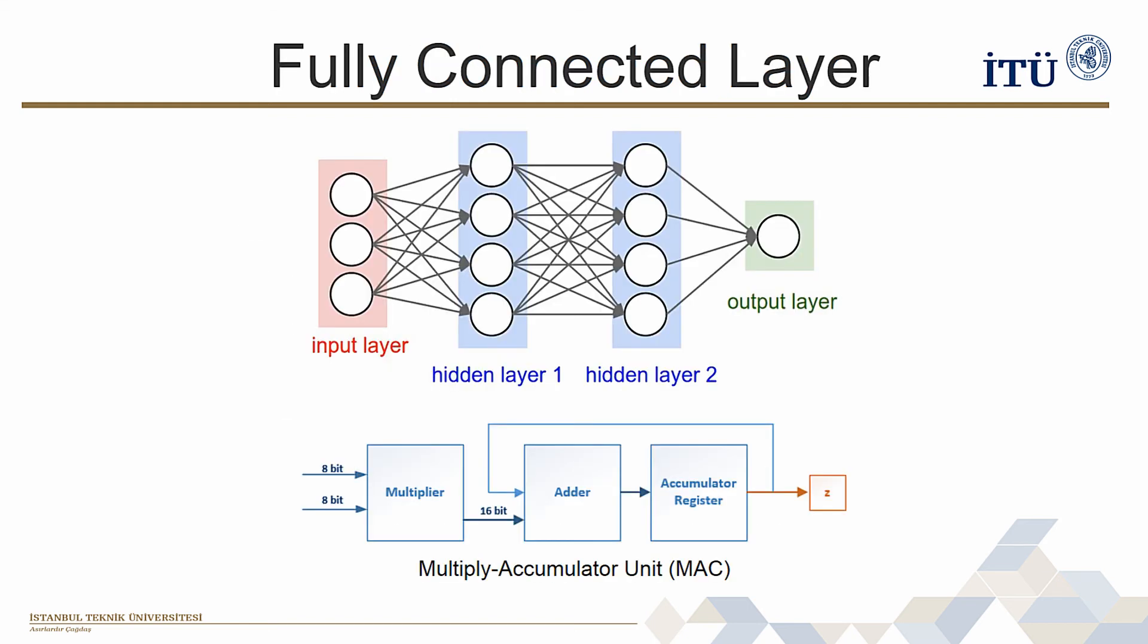The activations of the fully connected layer are computed using regular matrix multiplication operations with weights and additions with biases. The multiplications in every neuron of this layer are performed in a multiply accumulator structure.